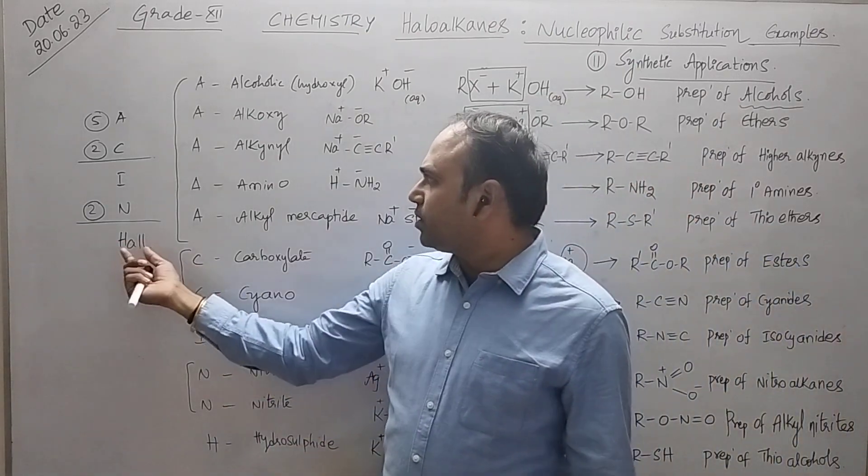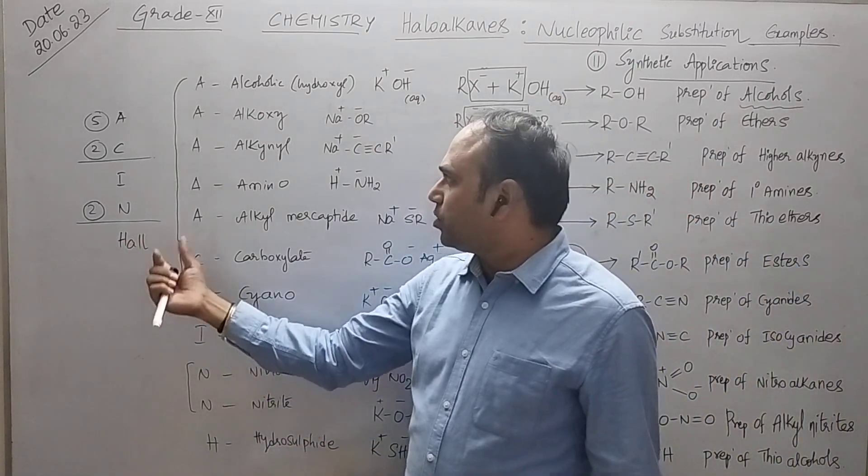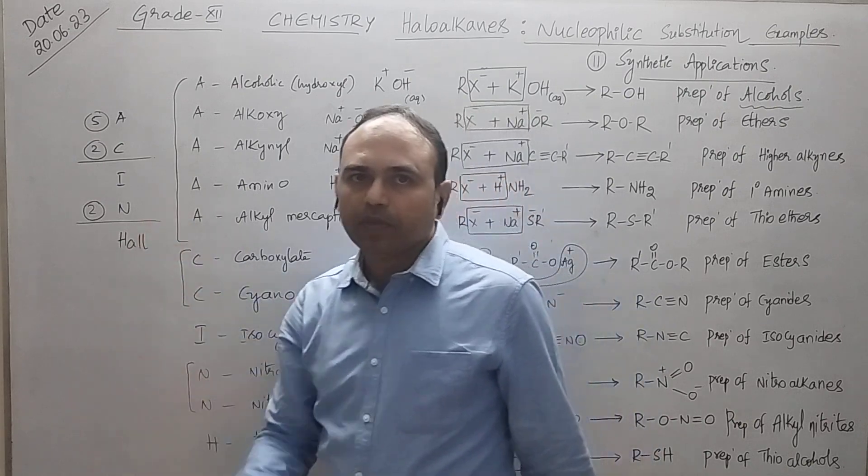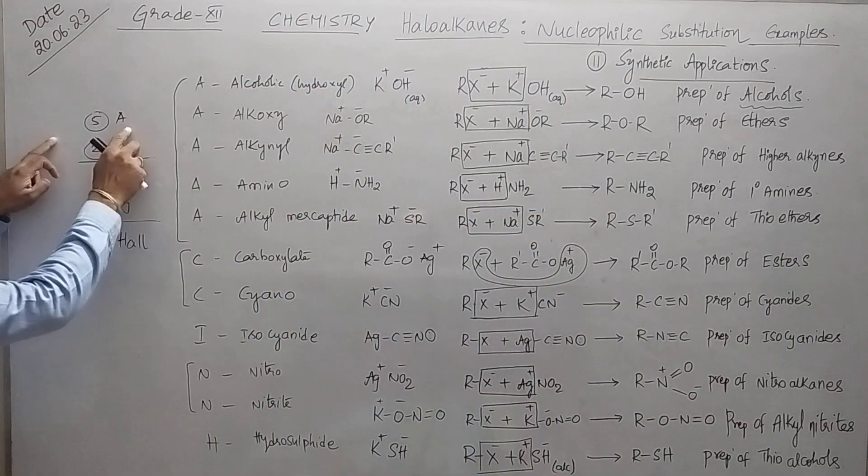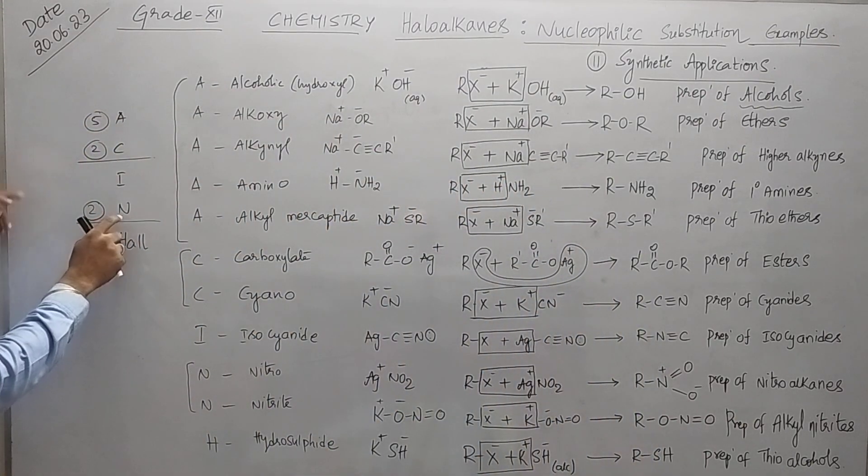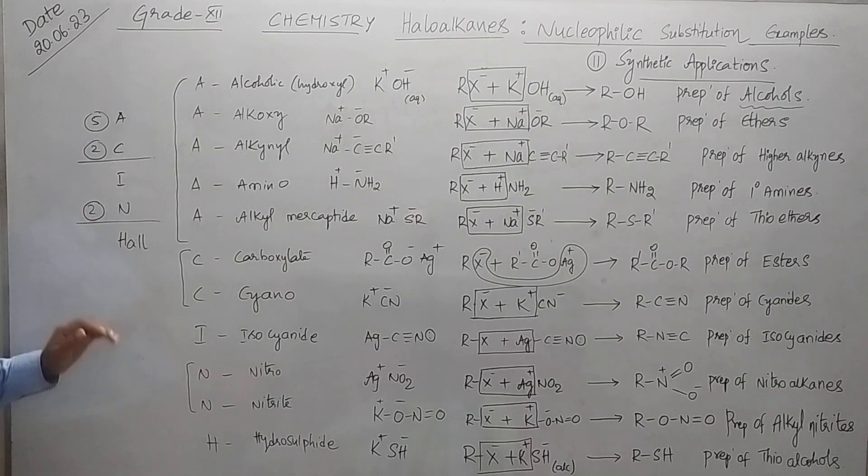What is that mnemonic? AC IN HALL. After that, A we have 5, C is 2, and N is 2. As an early method, we know to expand this and write A5, then 2C.